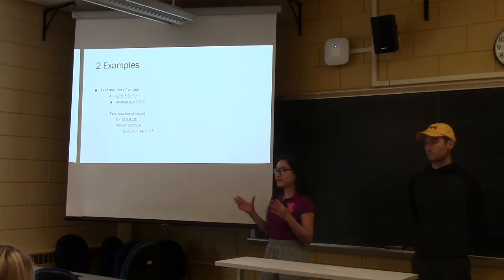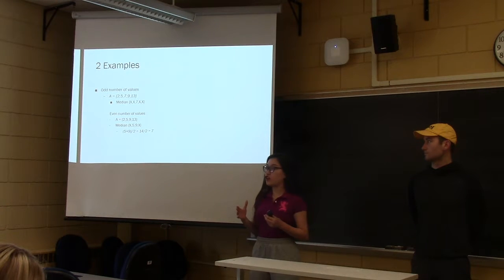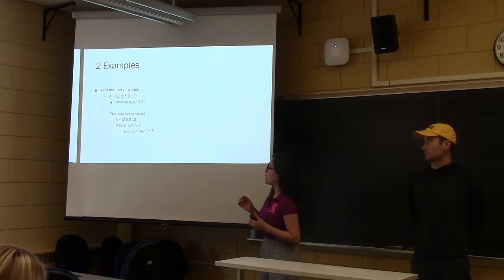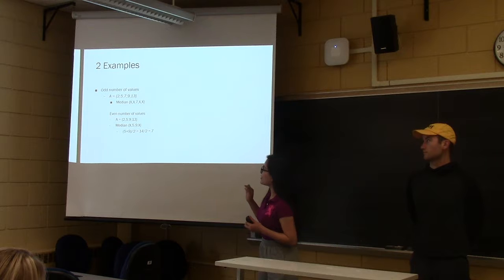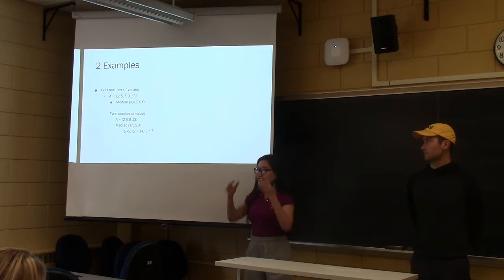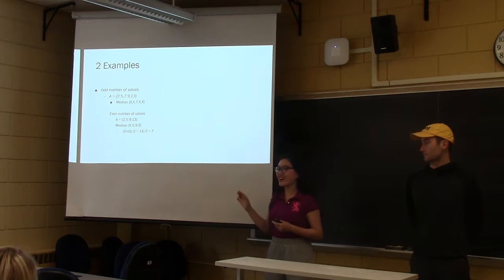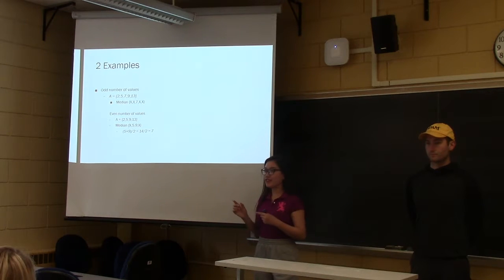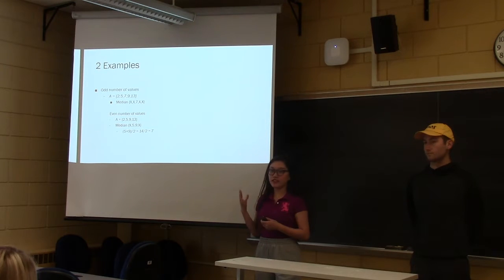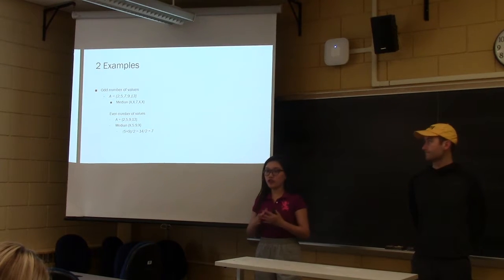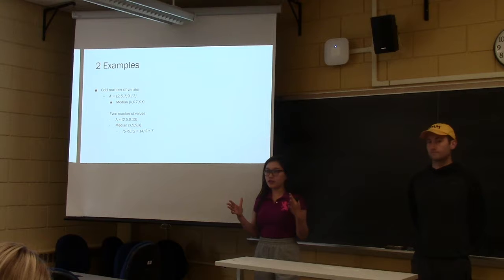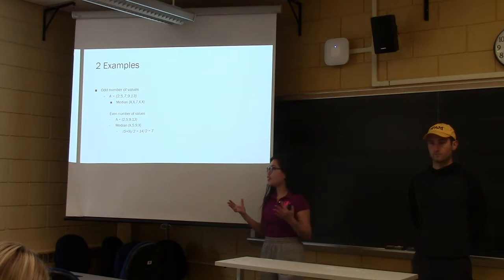So it's very simple. All you have to do is find the middle value. And here we have, oh sorry, five different values, and so here you would just cross out the first and the fifth, and then the second and the fourth, and then so you're left with the third value, which is seven here, as you can see. And it's very important to also order your numbers before you try to find the median of it.